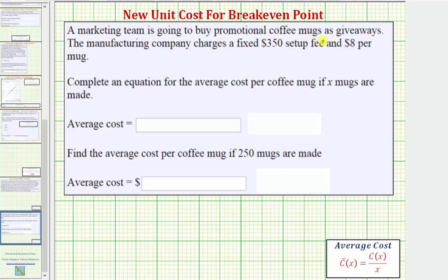A marketing team is going to buy promotional coffee mugs as giveaways. The manufacturing company charges a fixed $350 setup fee and $8 per mug. We're asked to complete an equation for the average cost per coffee mug if x mugs are made, and then find the average cost per coffee mug if 250 mugs are made.